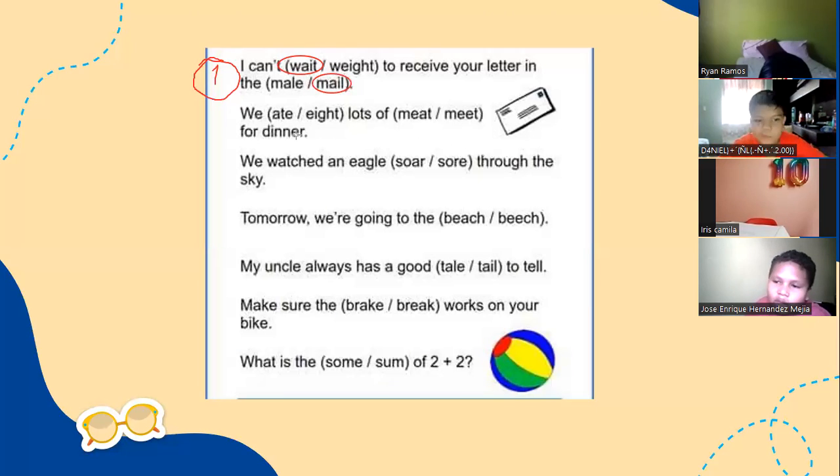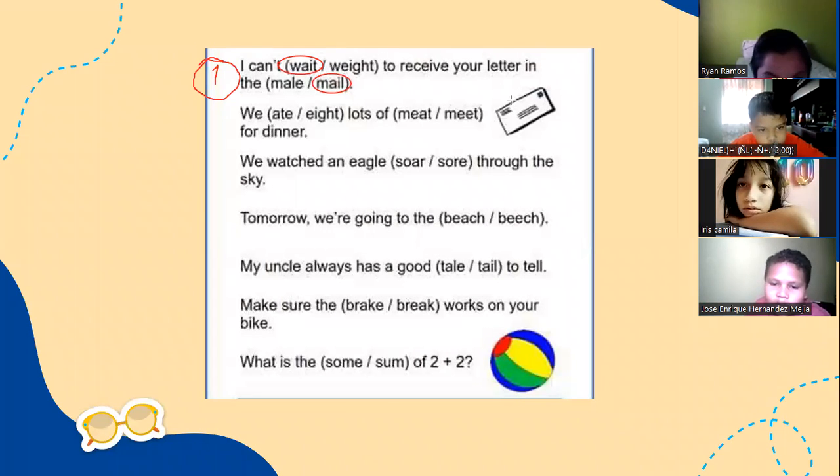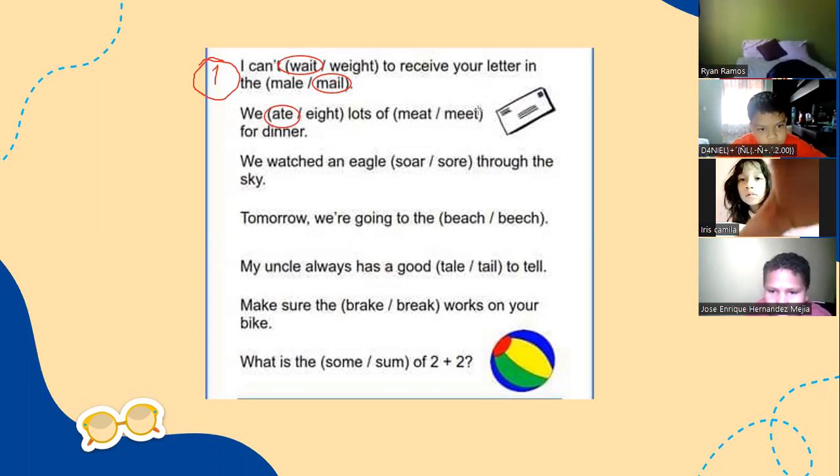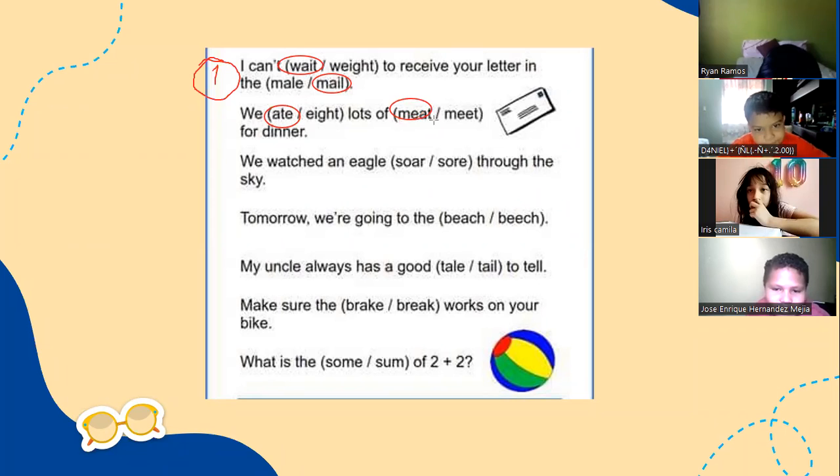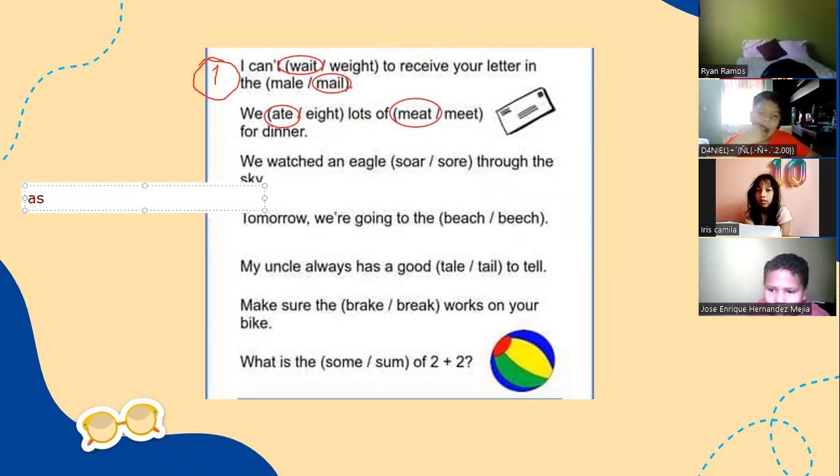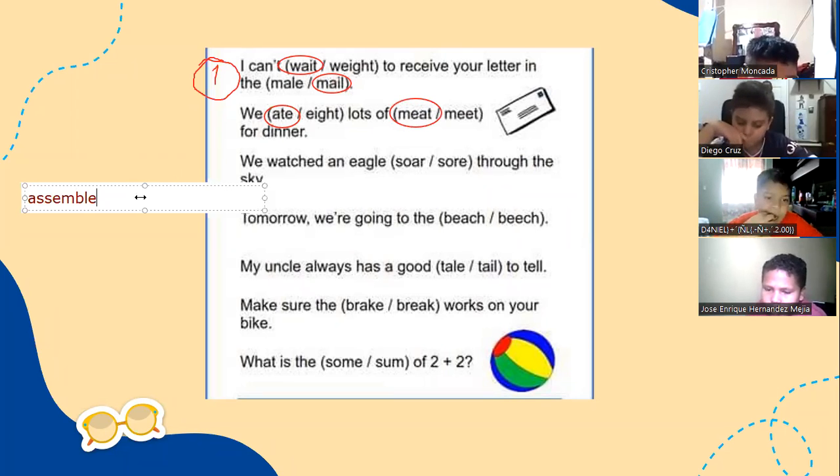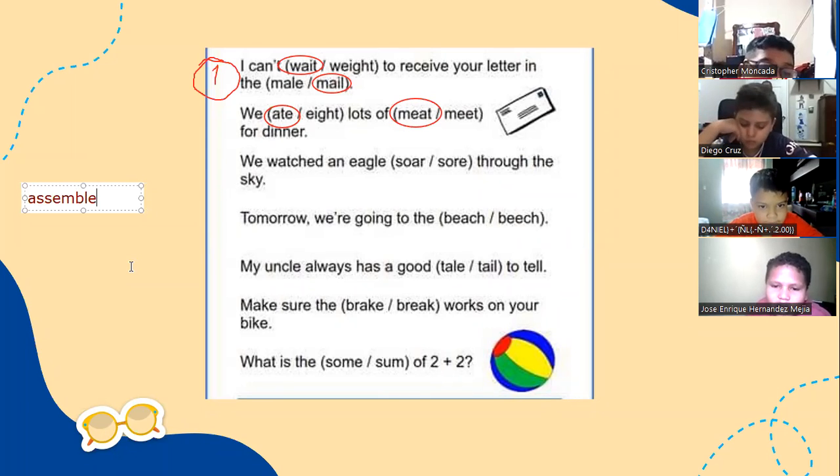Number two: we ate lots of meat for dinner. Ryan, which ate do you got? Two options: eight and ate. The first one or the second one? The first one. Yes, we ate lots of meat. Meet - the second one is assemble, remember? For example, we're gonna meet again. We're gonna meet on May 17 in the school from eight to eleven. The second meet is to assemble, is to get together.